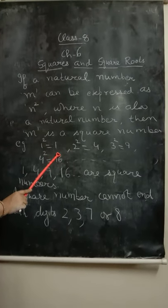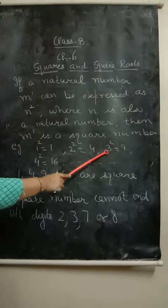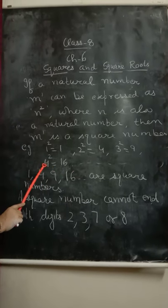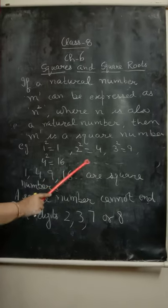For example, 1 square is equal to 1, 2 square is equal to 4, 3 square is equal to 9, 4 square is equal to 16 and so on.